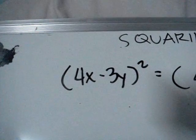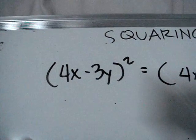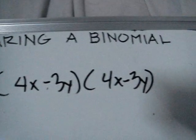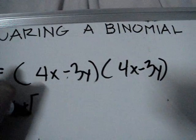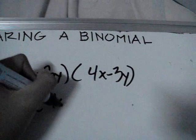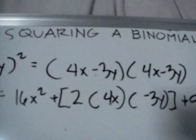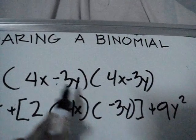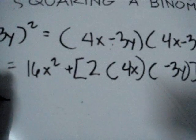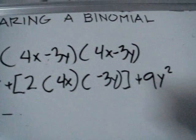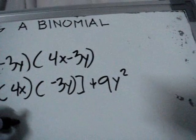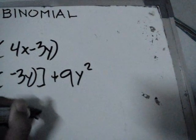But what if the expression involves subtraction? For example, (4x minus 3y) squared becomes 4x minus 3y multiplied by 4x minus 3y, which equals 16x squared plus 2 multiplied by 4x multiplied by negative 3y plus 9y squared. Because of the negative sign, the result is 16x squared minus 24xy plus 9y squared.